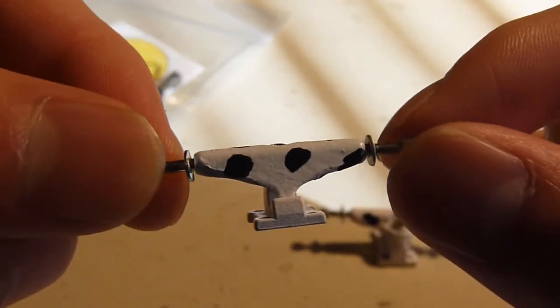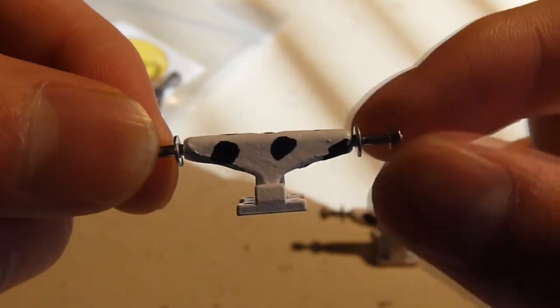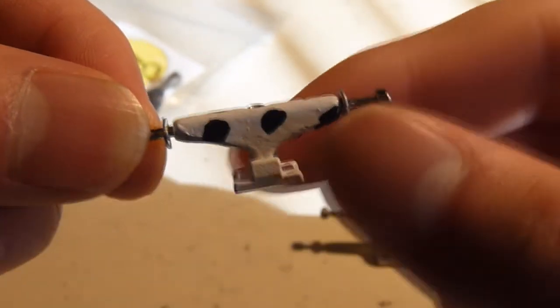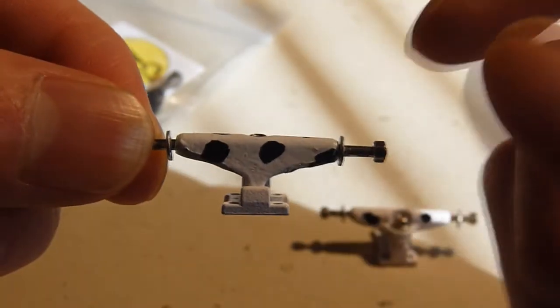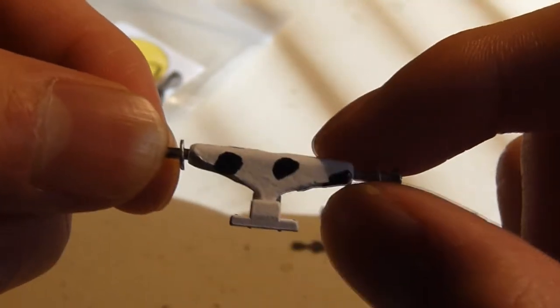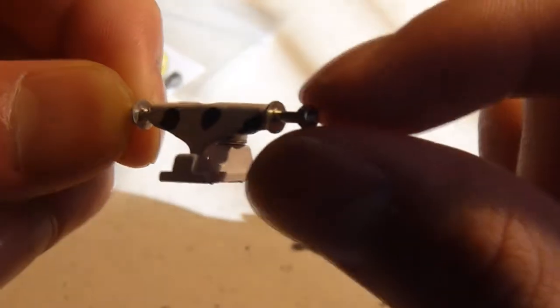They are custom shaped and custom painted trucks. The hangers are, if you don't know anything about rex trucks, they are custom shaped so that they are rounded more on the side here.